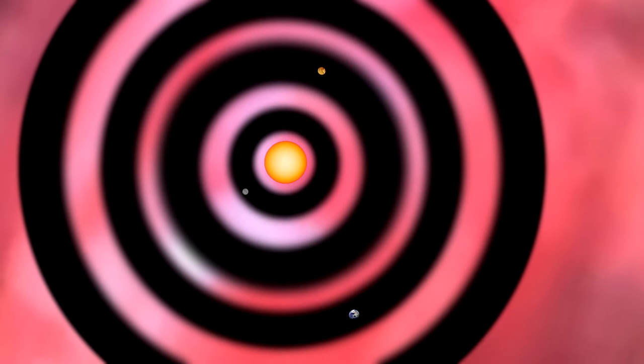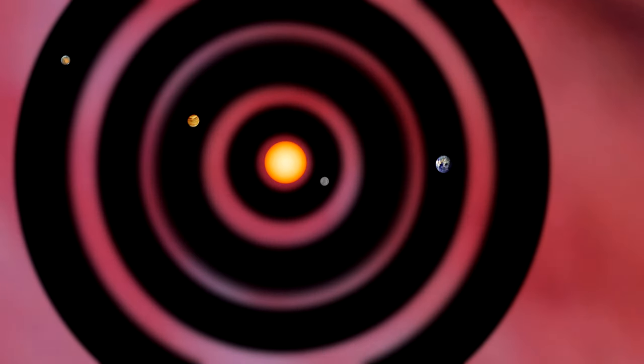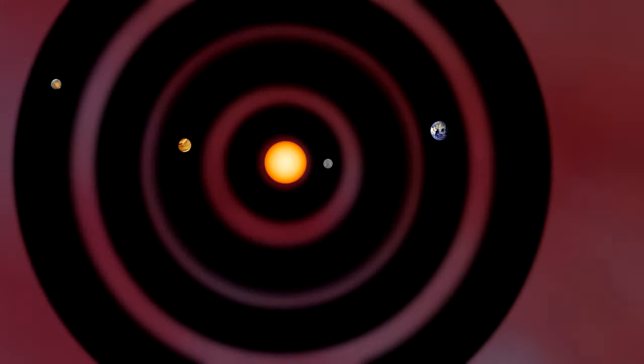The process of accumulating matter in the disk into larger objects came to an end when the sun ignited as a main sequence star, and its strong solar winds blew away any remaining loose material.